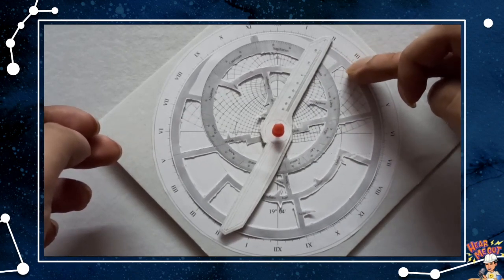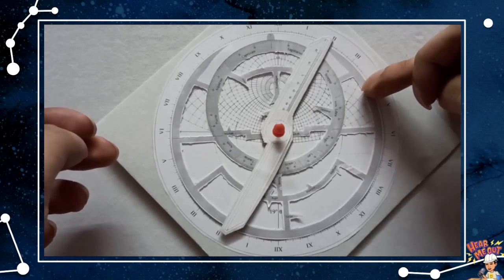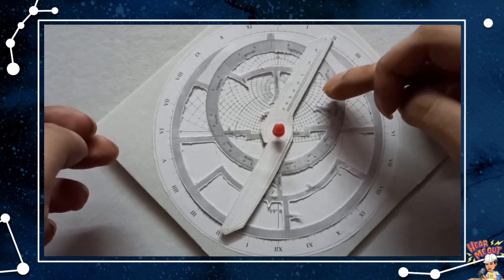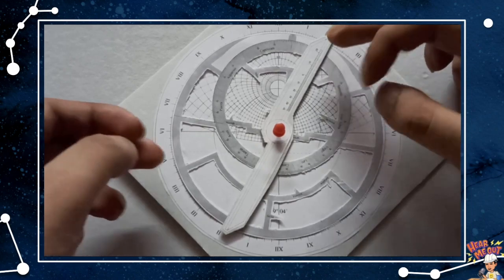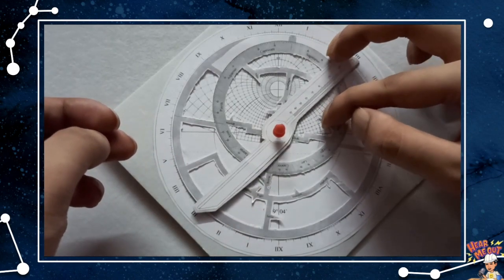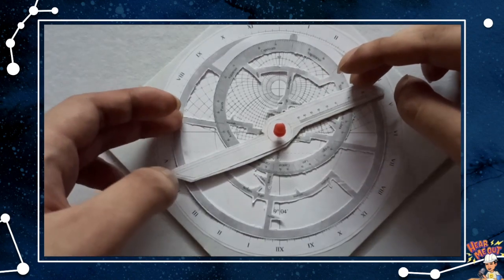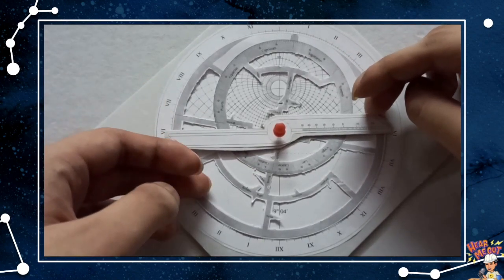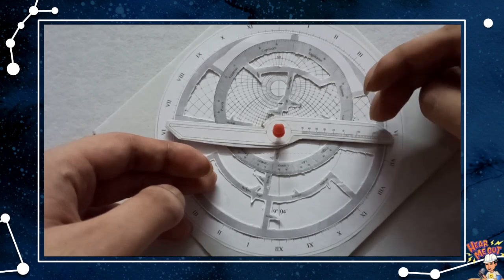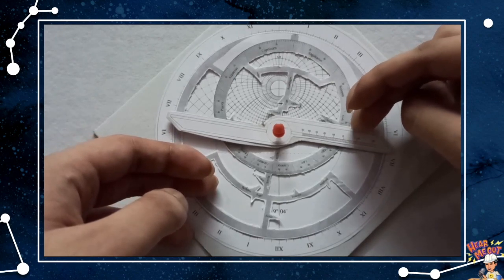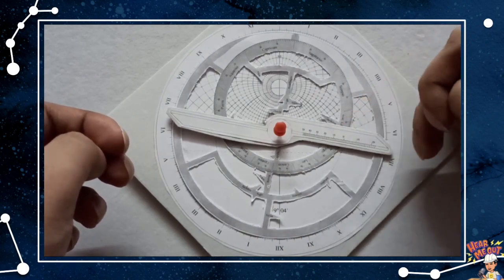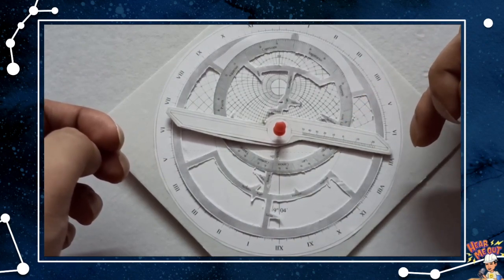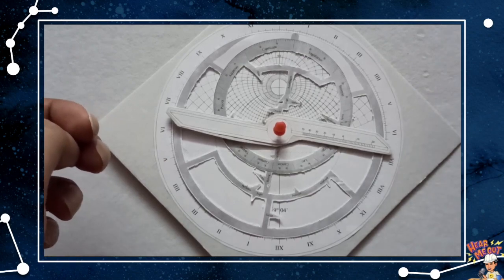30 degrees is, so this is 20, 40, so 30 is over here. Now we just move this rule to point at Virgo 25, just being careful not to move the rete. Virgo 25 and we get the time to be around 7 which is close to the actual time 7:30.